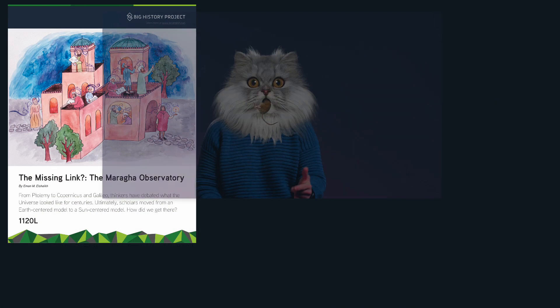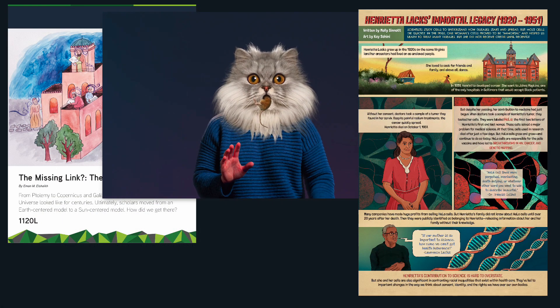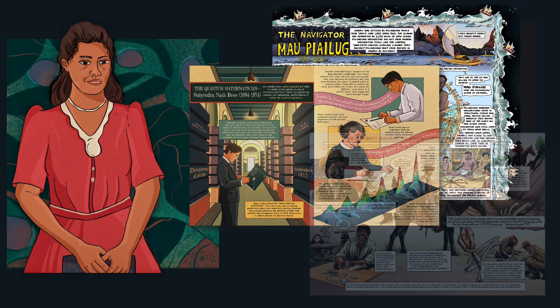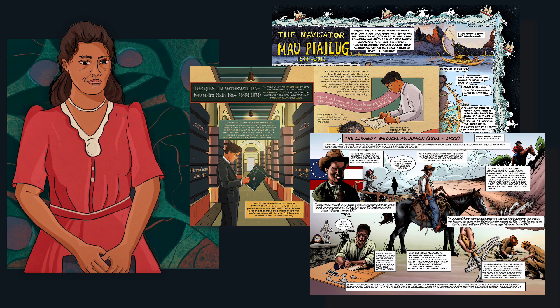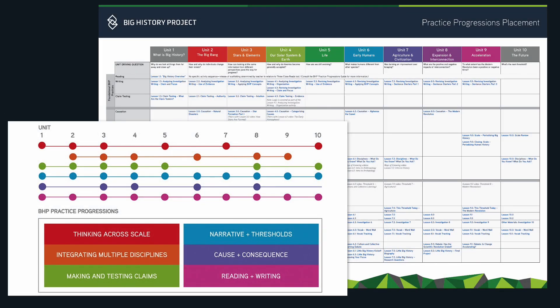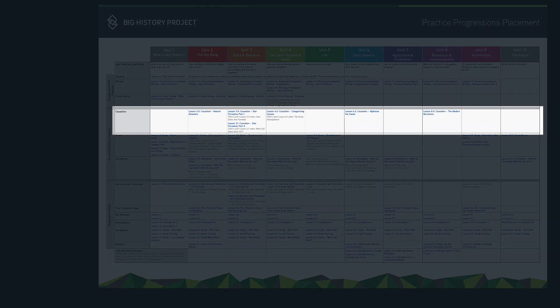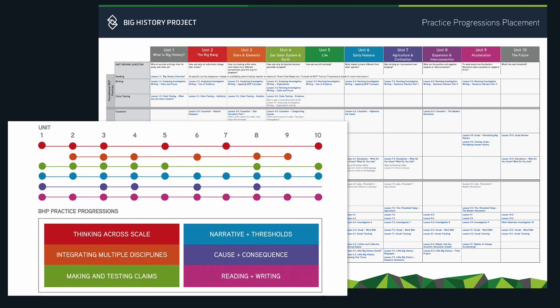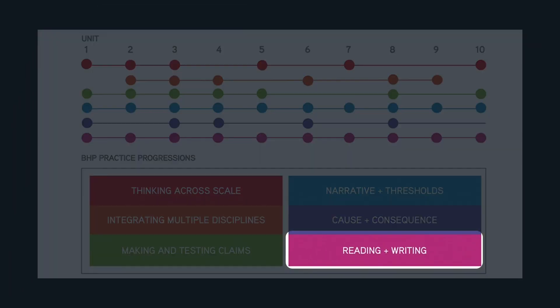BHP's content includes articles, videos, graphic biographies, and activities. Developed by historians and experts in their fields, they present a fresh, diverse, and inclusive account of history from a truly big-picture perspective. Each BHP skills progression is made up of a spiraling set of activities that incrementally challenges students over the course of the year. Let's take a closer look at how we support skills development in the key areas of reading and writing, and how we help you assess progress.